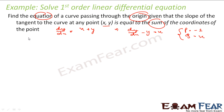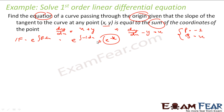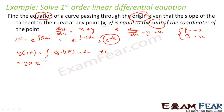I will find the integrating factor very easily. IF will be e to the power of the integral of p dx, which becomes e to the power of minus 1 dx, that is e to the power minus x. That becomes my IF. So my solution is y times IF equals the integral of q times IF dx plus a constant. So I get y times e to the power minus x equals the integral of q...